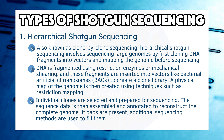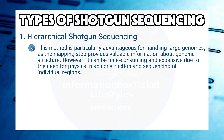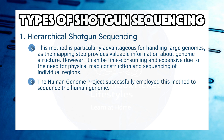If gaps are present, additional sequencing methods are used to fill them. This method is particularly advantageous for handling large genomes, as the mapping step provides valuable information about genome structure. However, it can be time-consuming and expensive due to the need for physical map construction and sequencing of individual regions. The Human Genome Project successfully employed this method to sequence the human genome.